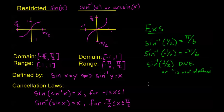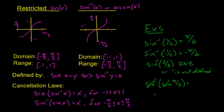Let's look at some cancellation law problems. Sine inverse of sine of pi over 3: the first thing I want to know is does this follow my cancellation laws? I'm looking at the second cancellation law — sine inverse of sine. I can think of it as canceling as long as x is in the restricted domain. Pi over 3 is less than pi over 2, so this is in the restricted domain. We can cancel these out, so the answer is just pi over 3.